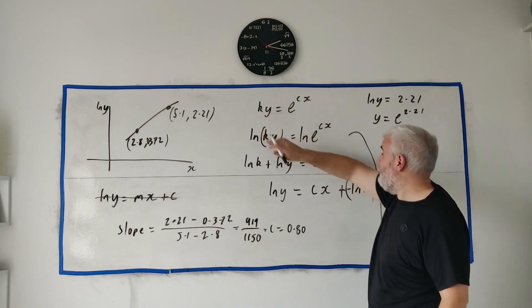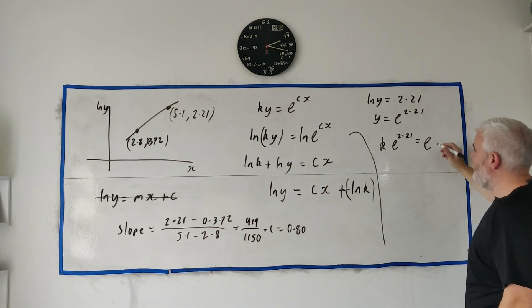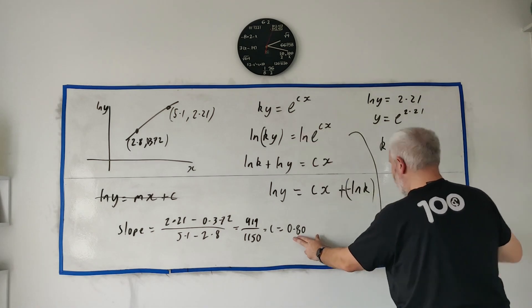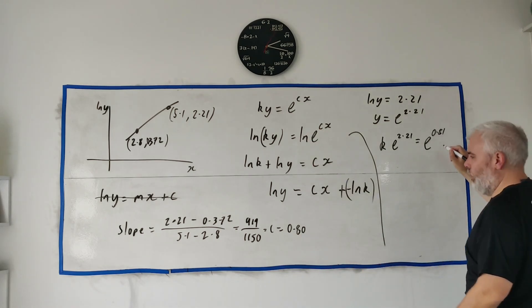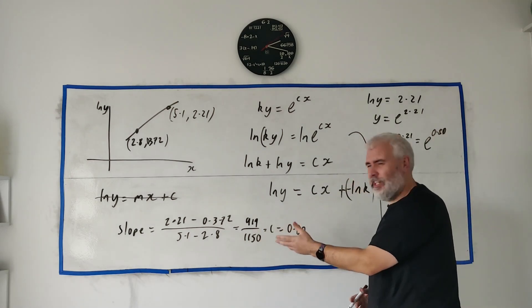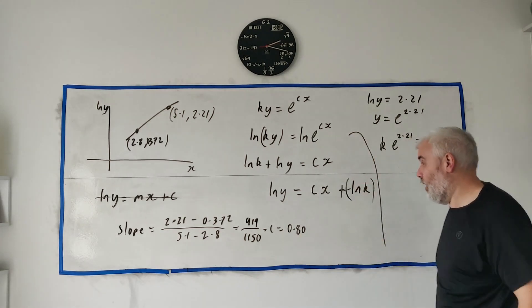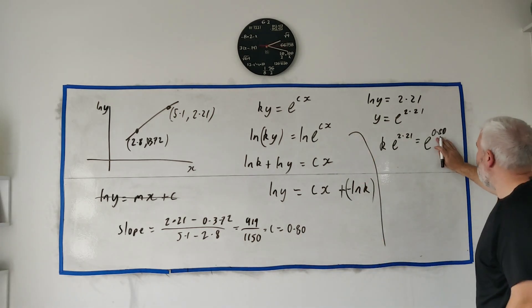k multiplied by y, which is e to the 2.21, is equal to e to the power of c—you could go, sorry, 0.8. You could use the exact form, I usually do, but because we're rounding off both of them to two significant figures it's not going to matter. e to the power of 0.8 times x, and we use this y so we better use this x, that's 5.1.